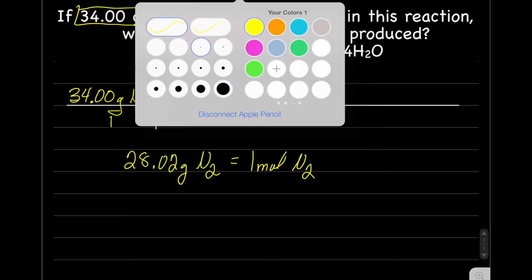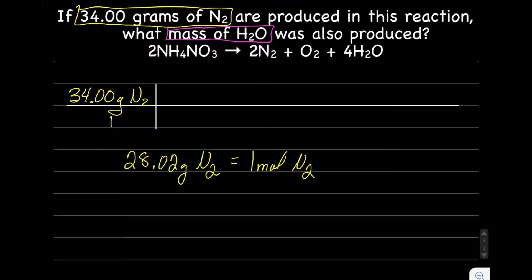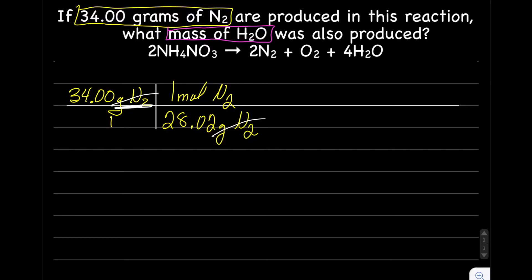So our first equality will be 28.02 grams N2 equals one mole N2. And now we've got to figure out what goes on the bottom, what goes on the top. We have grams nitrogen at the top, which means we need grams nitrogen at the bottom. Which means the other one, mole N2, goes at the top. We'll cross out our units and molecules. We have gram N2 that crosses out gram N2. We are at mole N2. We wanted mass H2O, so we are not done yet.